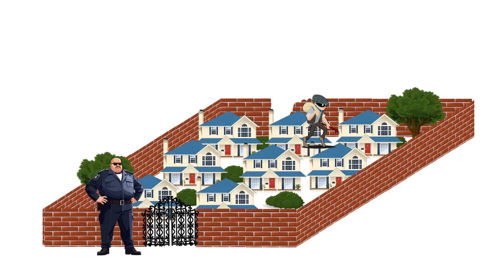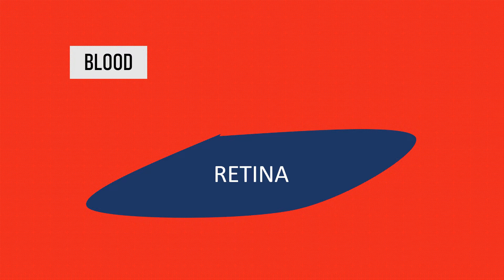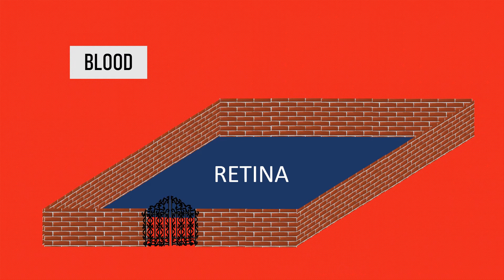Now imagine this gated community as the retina and the area surrounding it as blood that is present in the systemic circulation. Our retina is closed off from the systemic circulation and only certain selective substances are allowed to enter and leave the retina. This barrier that separates the retina from the systemic circulation is known as the blood retinal barrier.